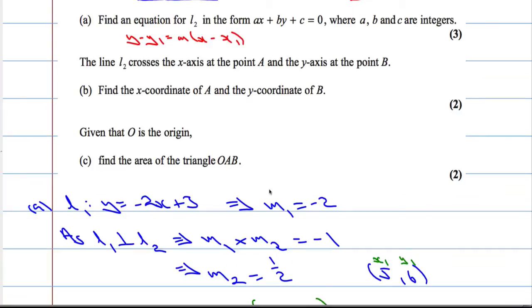We should have written it in the form ax plus by plus c equal to 0, where a, b and c are integers. So, that's that question sorted out.